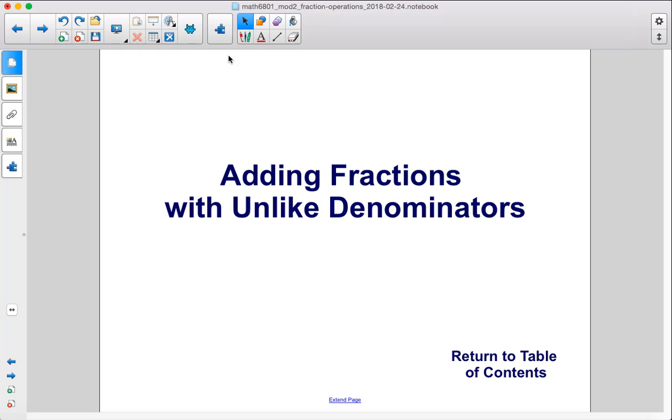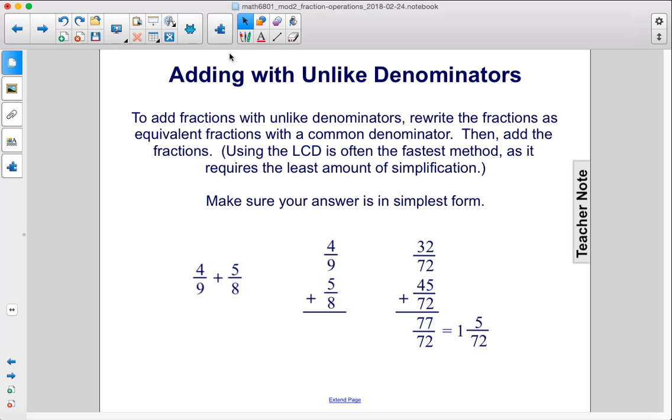Adding fractions with unlike denominators. To add fractions with unlike denominators, rewrite the fractions as equivalent fractions with a common denominator. Then, add the fractions. Using the lowest common denominator is often the fastest method, as it requires the least amount of simplification. Make sure your answer is in simplest form.